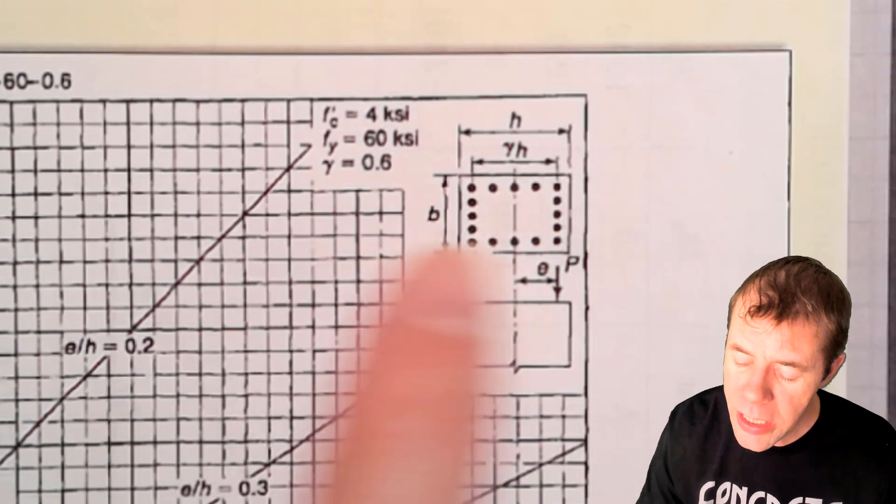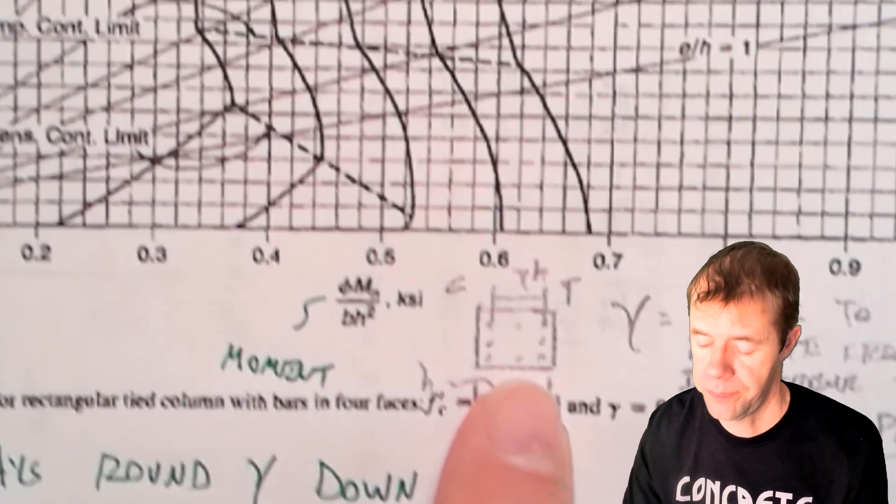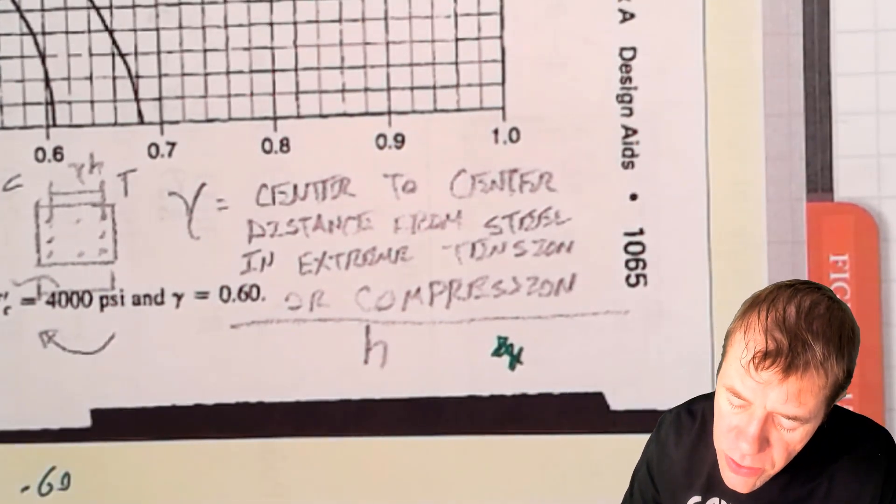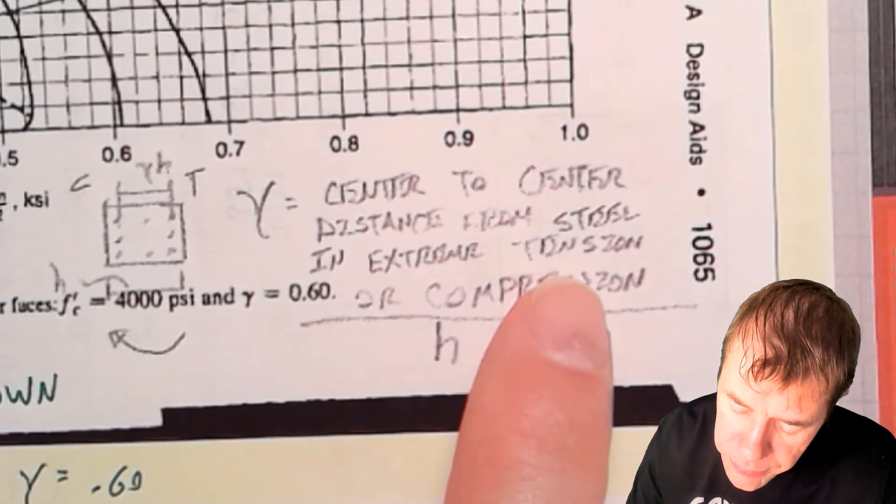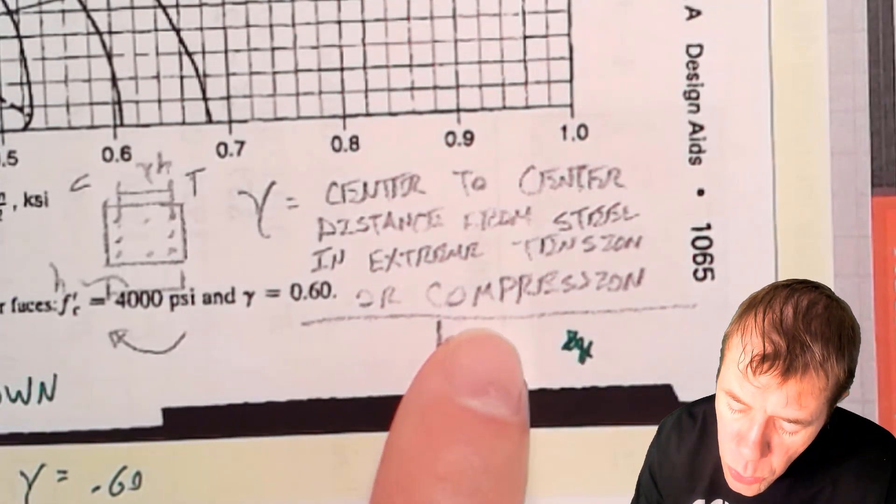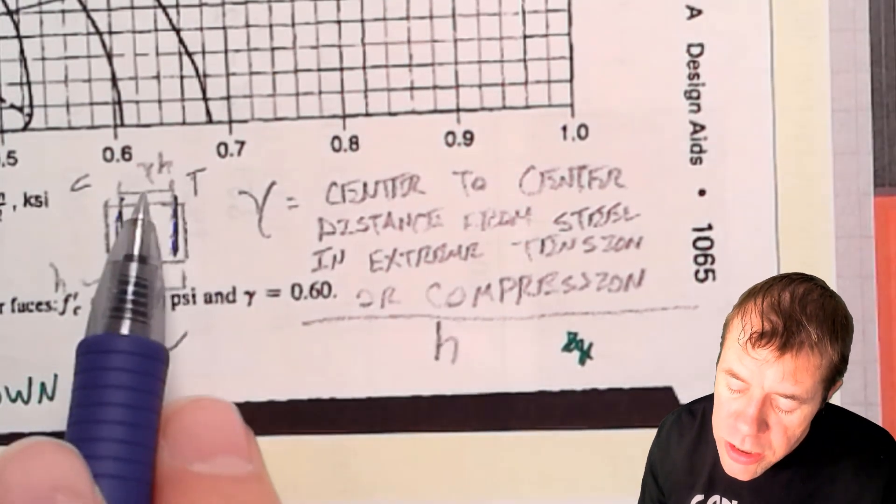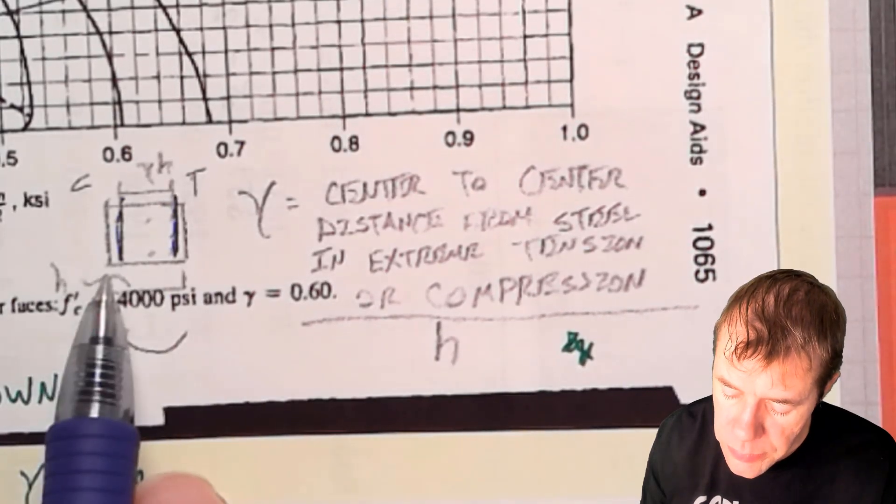Now how do we get gamma? How do I find gamma? Let's go down here to the bottom. Now what gamma is, it's this. Let's zoom in here a little bit. What gamma is, is the center to center distance from the steel in extreme tension or compression. So it's this distance from here, center of that steel, to center of that steel. That's called gamma h. It's that value divided by h, the entire height.